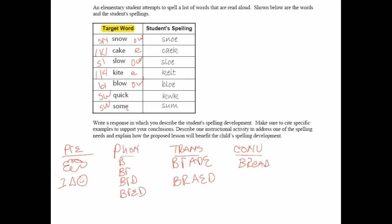When we look at what the child is able to do in snow, cake, slow, kite, blow, quick, and some, you can certainly describe the strengths — encoding blends in onset position, encoding hard K sounds, encoding blends, encoding hard sounds. For quick and some, that's just pure phonetic level stuff. Starting at the bottom with some: this is a phonetic spelling; it is not transitional. There's really no pattern to be spelled in the first place. He would have had to stick a silent E at the end for it to be transitional. He didn't, so it's all by dominant sound. The same is true for quick.